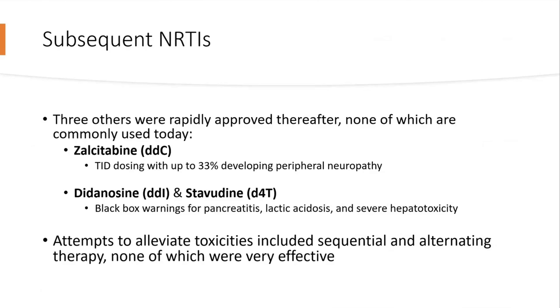Subsequent NRTIs came out fairly soon: zalcitabine, didanosine, and stavudine. All of these came with their own significant toxicities. Zalcitabine had up to a 33% chance of peripheral neuropathy. The others had black box warnings for pancreatitis, lactic acidosis, and severe hepatotoxicity. Attempts to alleviate this included sequential and alternating therapy, none of which were very effective.